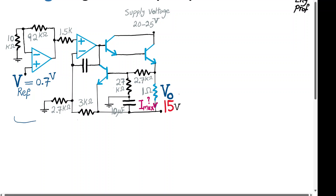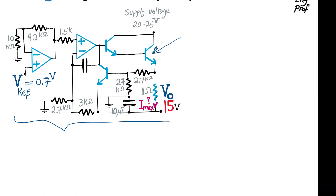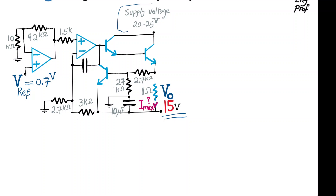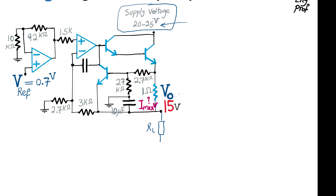The voltage regulator is designed in this circuit using three BJTs — bipolar junction transistors — and two ideal op-amps. We want to show that the output of this setup is going to be a constant 15 volts, even though the supply voltage is a non-constant variable in the 20 to 25 volt range, so it's not an accurate supply voltage, but the output is a regulated 15 volts irrespective of a reasonable range of load applied at the output.